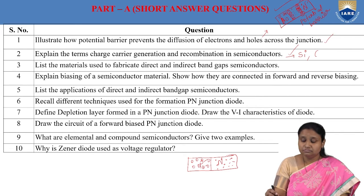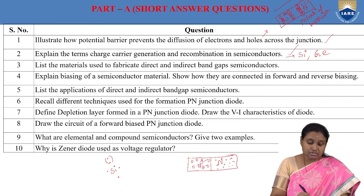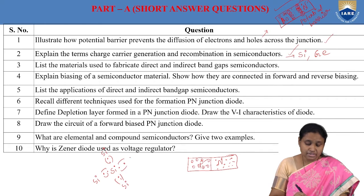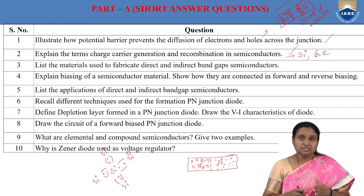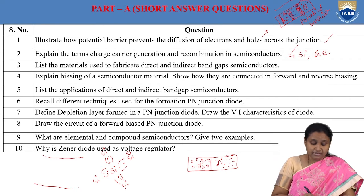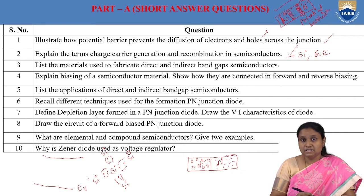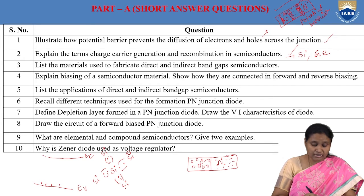If we take silicon, it belongs to group 4 and has 4 valence electrons. It forms covalent bonds using those 4 valence electrons, so there are no free electrons at low temperature. In terms of the energy level diagram, if EV is the topmost energy level of the valence band and EC is the lowest energy level of the conduction band, all electrons taking part in covalent bond formation are electrons in the valence band.